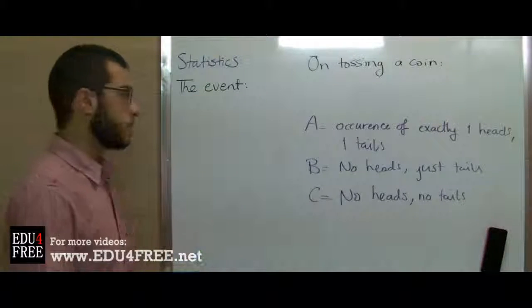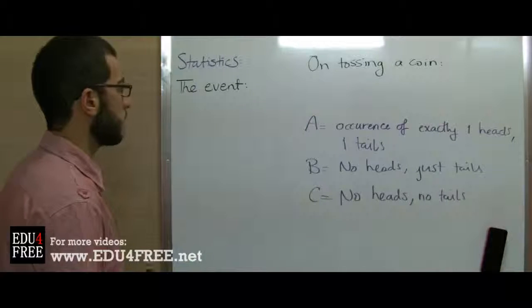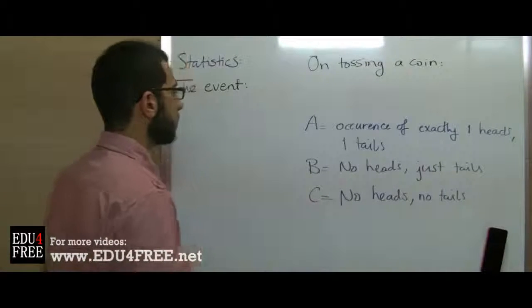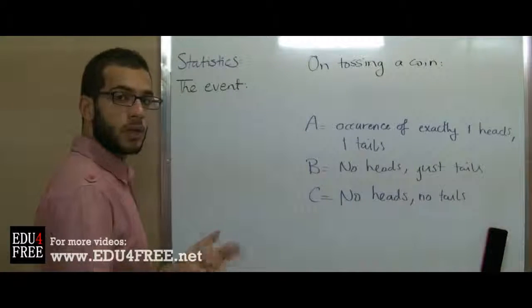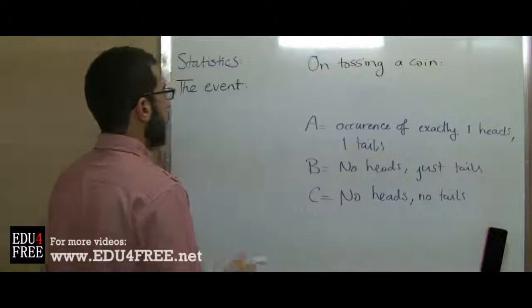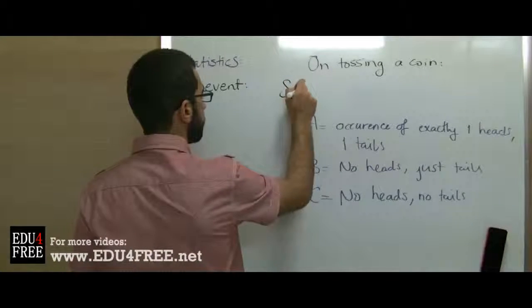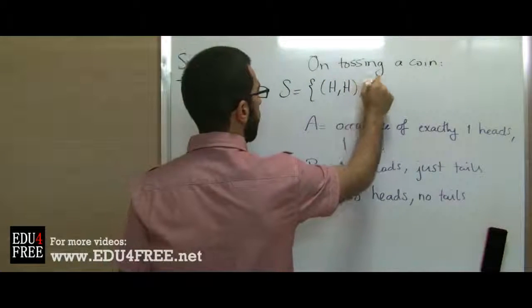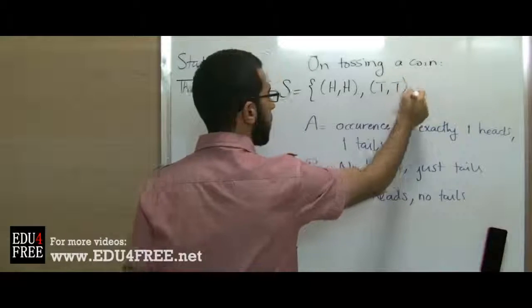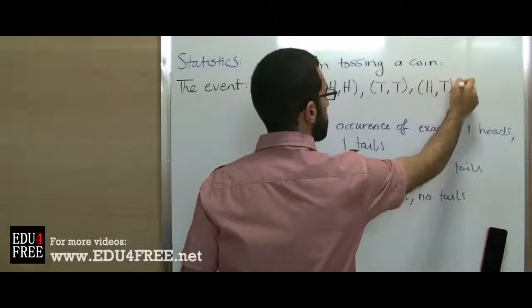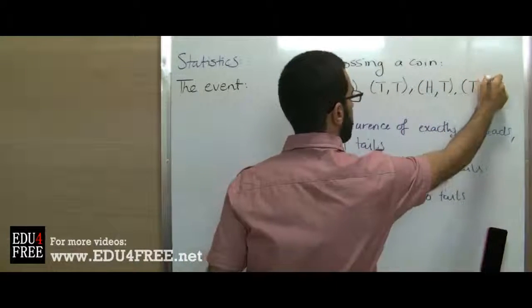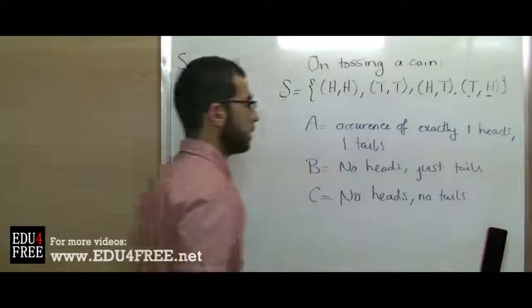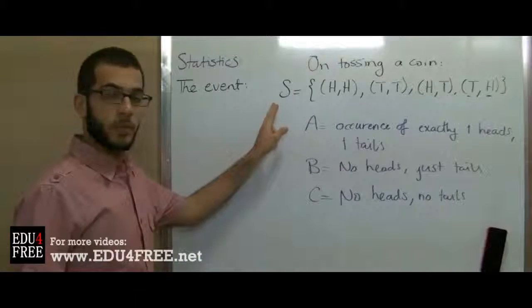Here the event is a subset from the sample set. So on tossing a coin for two times successfully, our sample set will be like this: we may get two heads or two tails, or in the first time heads and tails in the second time, or vice versa. So this is our sample set.